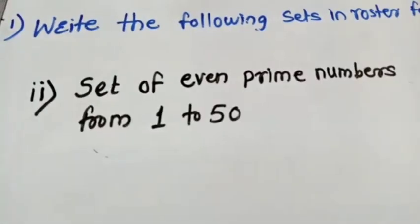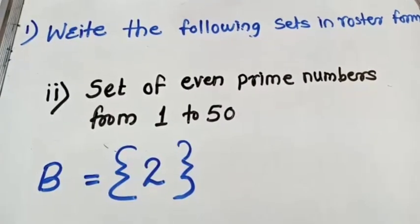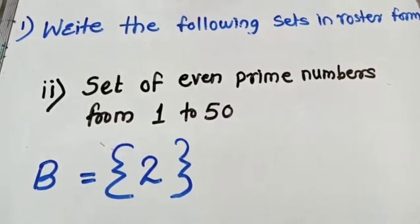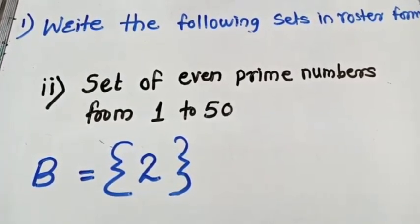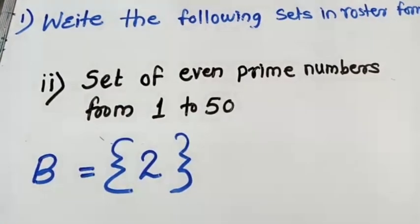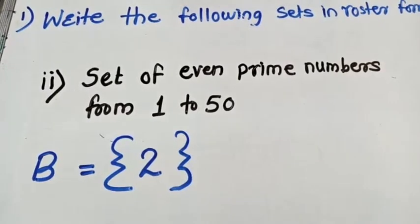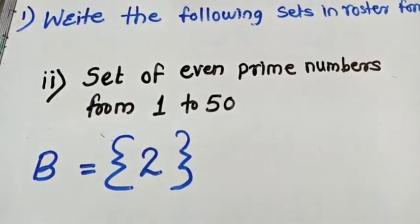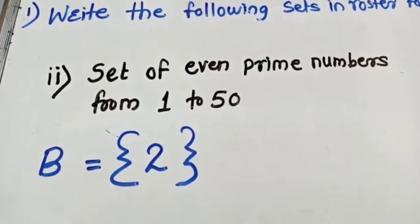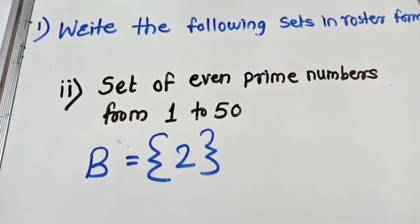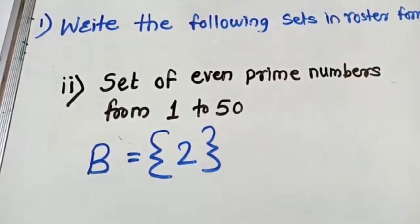Next example: set of even prime numbers from 1 to 50. Read the question carefully — they ask for even prime numbers from 1 to 50. The answer is only 2, which is an even prime number. So set B contains only one element, that is 2. Everyone observe carefully that from 1 to 50 all prime numbers are odd except 2.